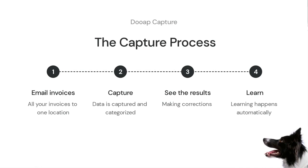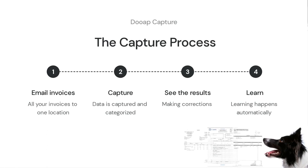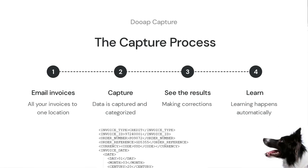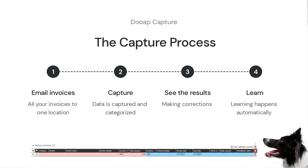First, all invoices are routed to the capture email. Here, the optical character recognition processes the files and digitizes the information to a data format. What sets us apart from other software is the ability to understand semantically the data and not only look at the location. This improves especially the first capture rate, but also the quality overall.